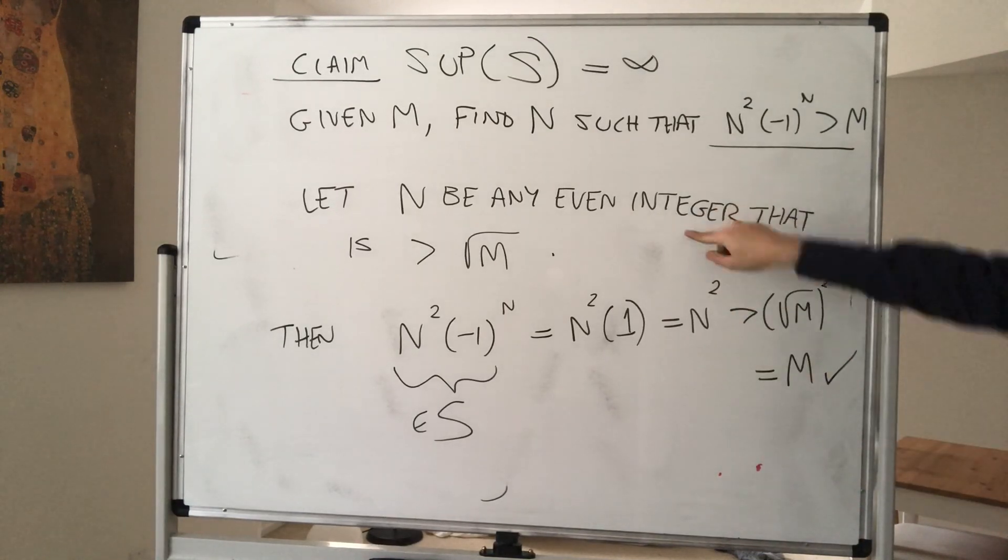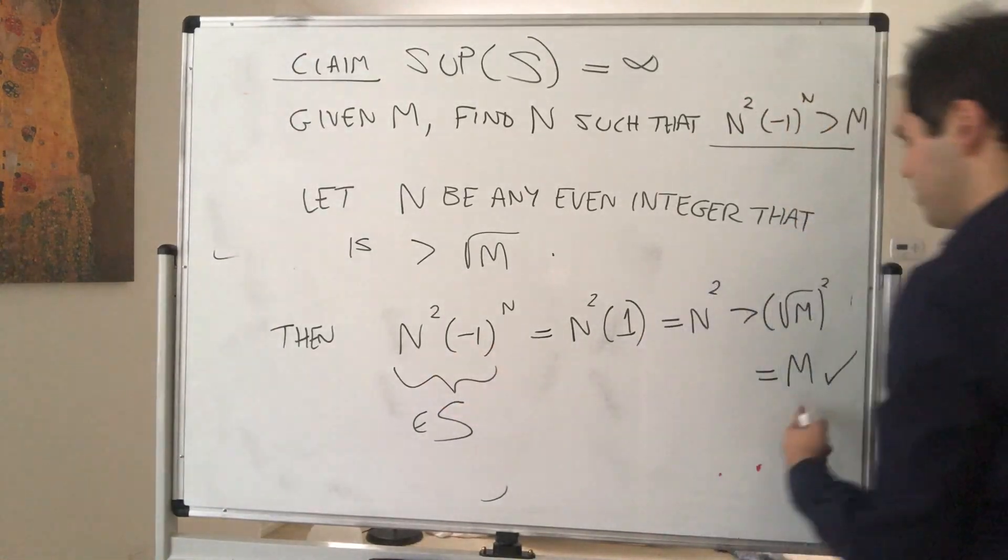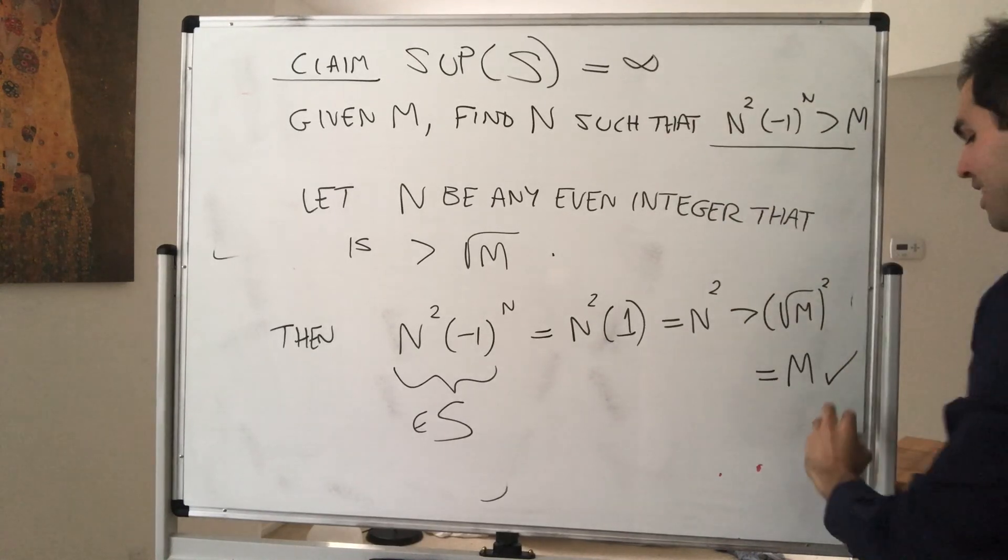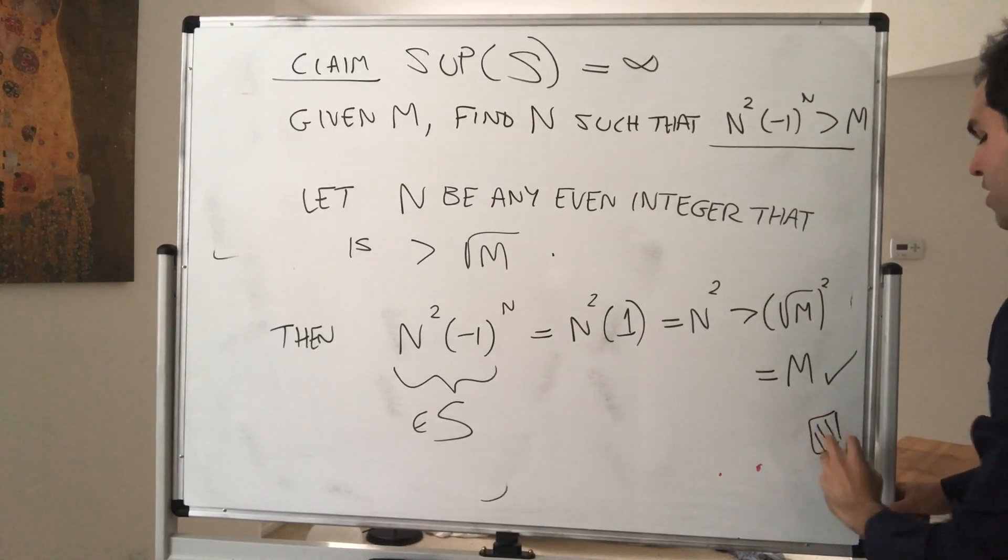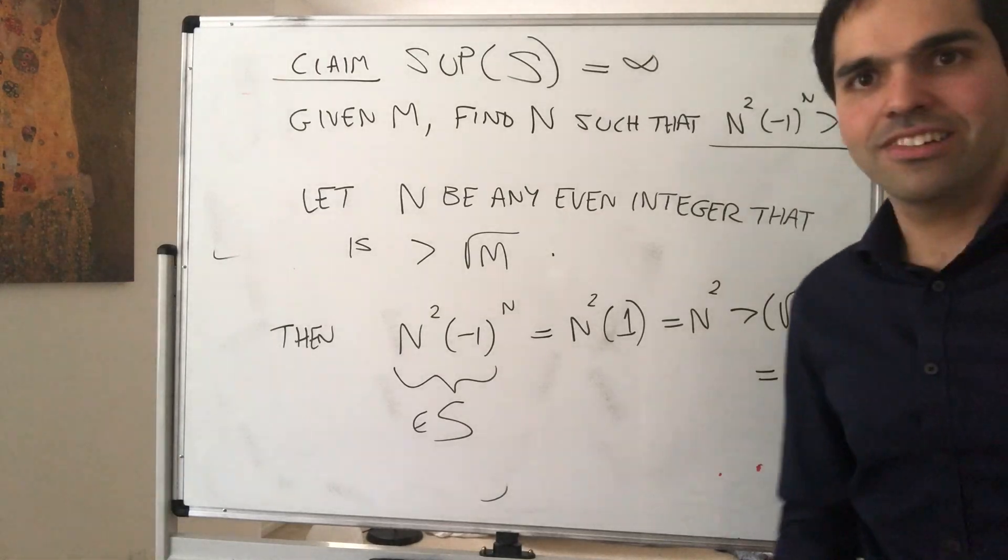So therefore, with this choice of n, we get that this term of the sequence is actually bigger than m. And therefore, we have shown that the supremum of S is infinity. Alright, and that's all for today.